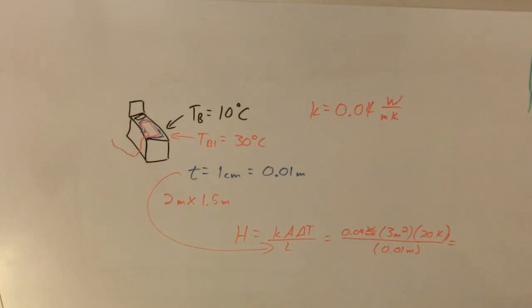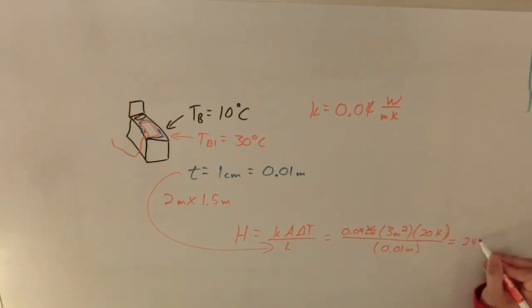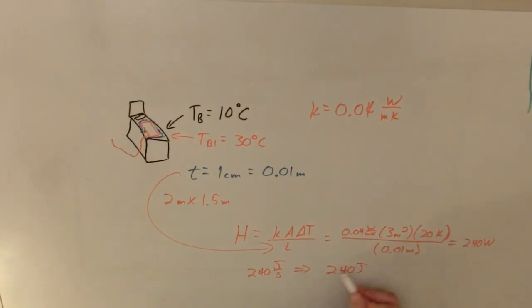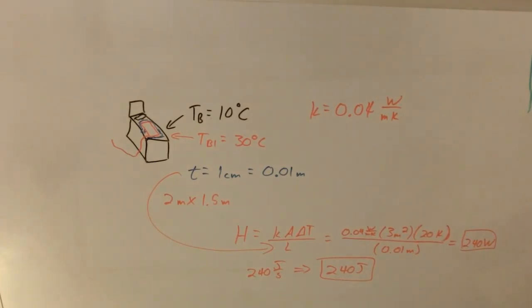When I evaluate this: 0.04 times 3 times 20 divided by 0.01 gives me 240 watts, which is the same as 240 joules per second. In other words, in the first second, 240 joules of energy flow into the bed. For these questions, getting the answer in watts is sufficient, but I wanted to connect it back to energy values. That's how we find heat transfer rates.